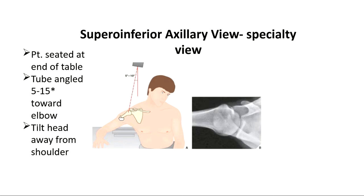This view is not comfortable for the patient — having the arm extended while pulling the neck back is very uncomfortable. You also have to make sure the IR is underneath on the table to capture the anatomy. Many orthopedic doctors like this view, so it's important to know what it looks like even though it's not in the Bond/Tigges positioning book. A handout is also provided showing the patient positioning and the anatomy demonstrated.